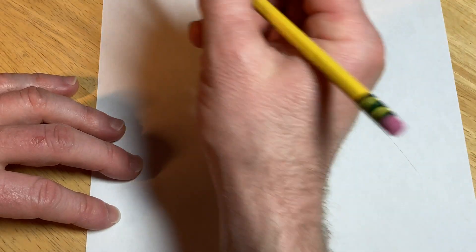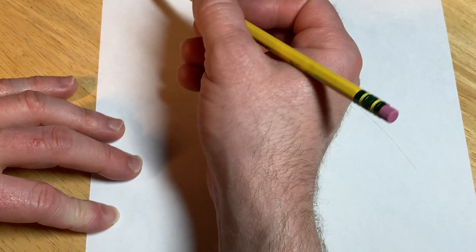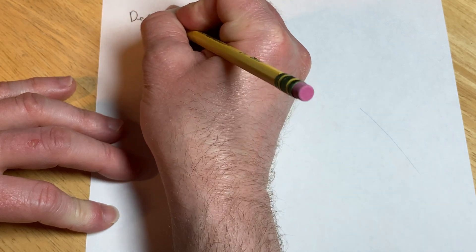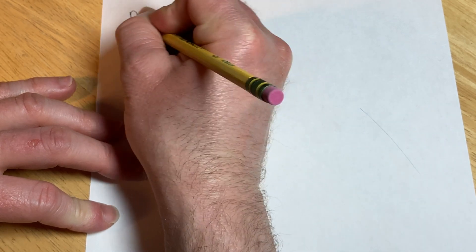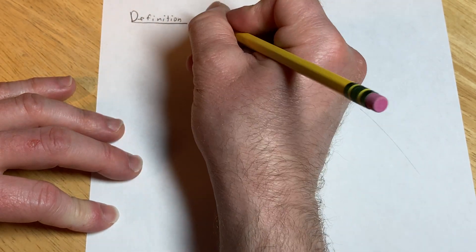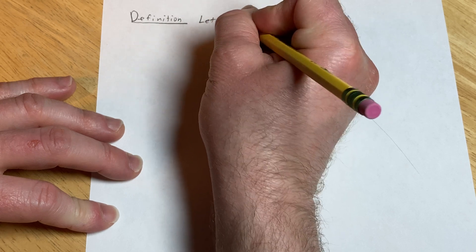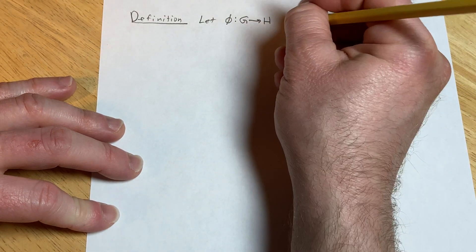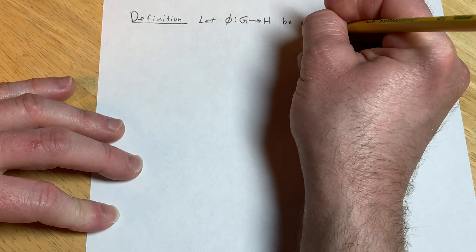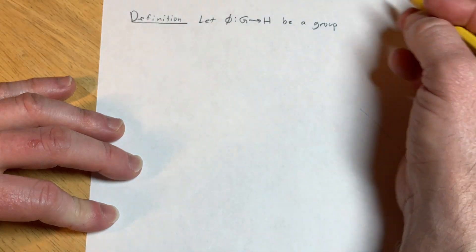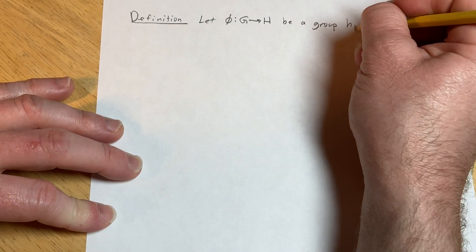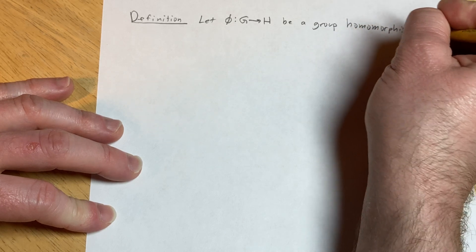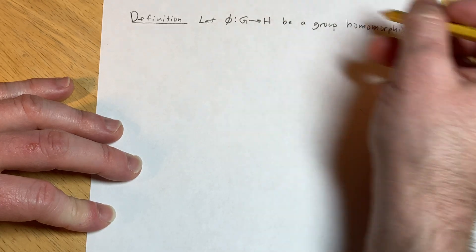Hello, in this video we are going to define the kernel of a group homomorphism. So let phi from G into H be a group homomorphism, where G and H are both groups.